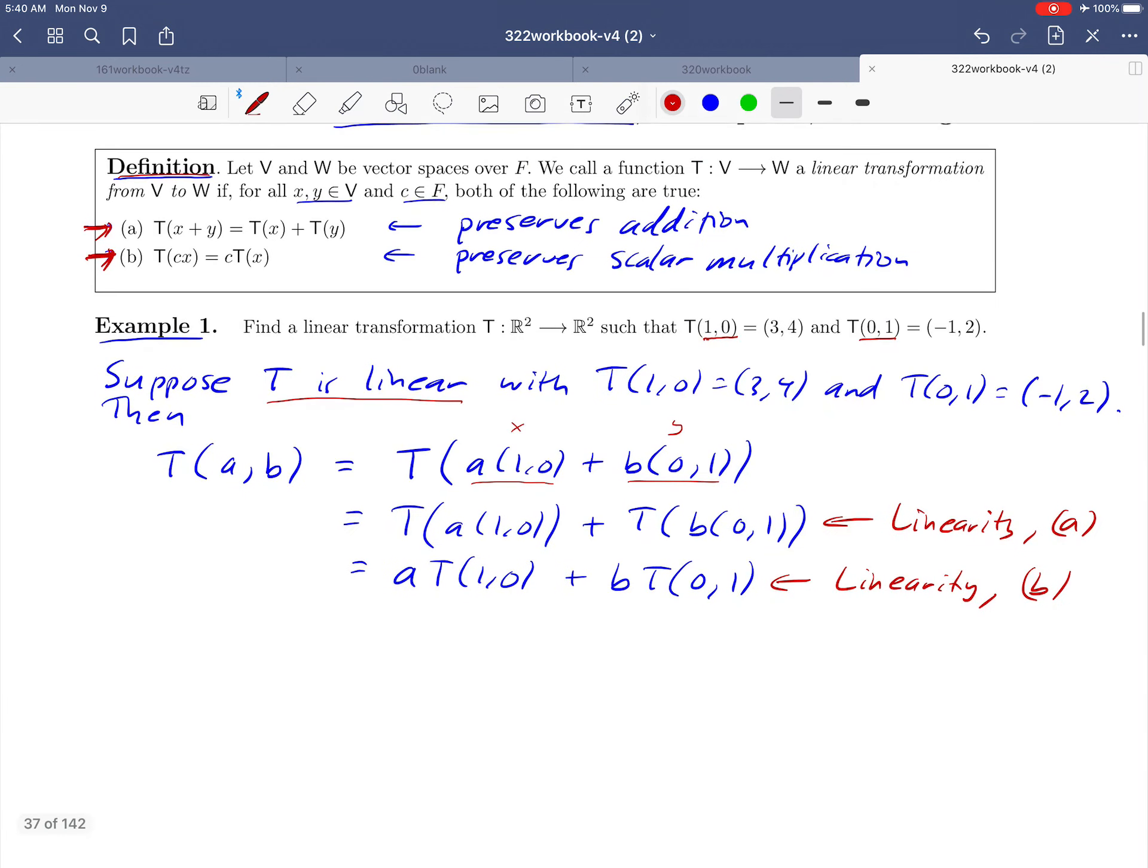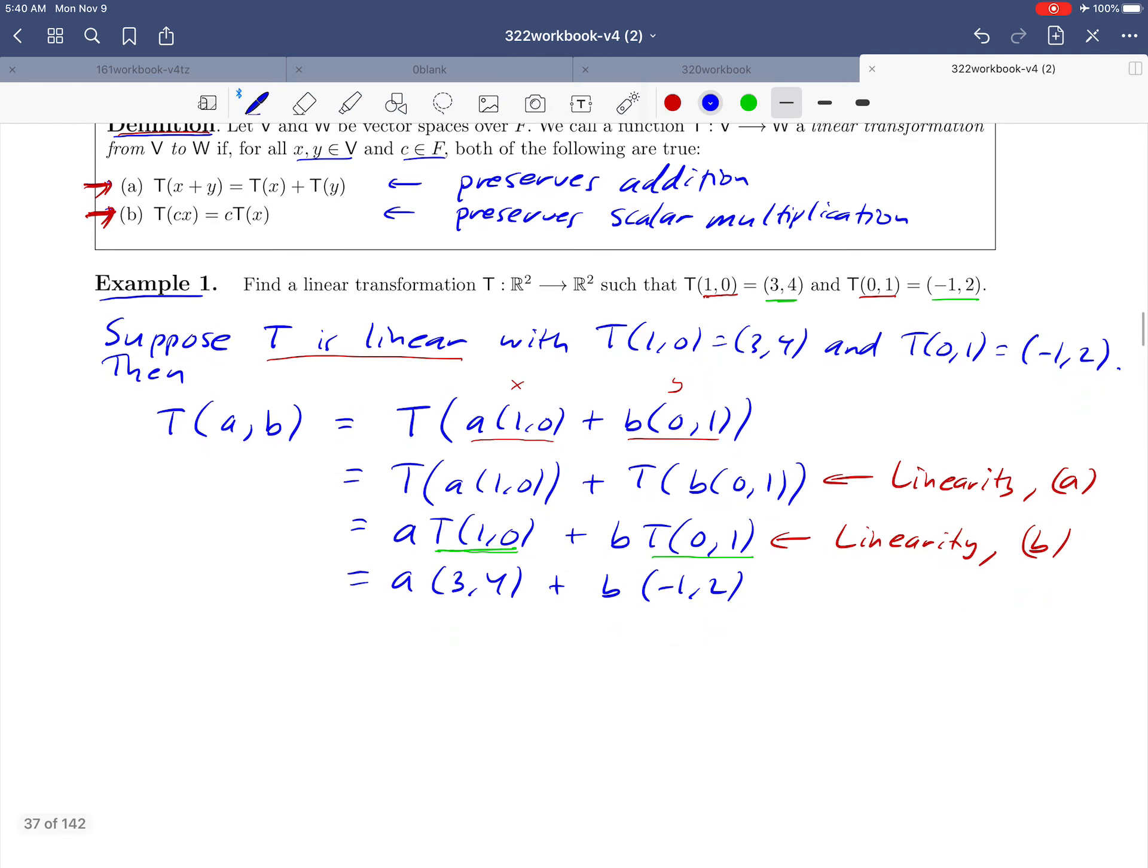But notice what we've done here. We've broken this down to a point where we've got T of (1, 0) and T of (0, 1), and we know what those values are. T of (1, 0), for example, is given to us up here as (3, 4). So this is now equal to a times (3, 4). And then similarly, T of (0, 1), that's (-1, 2). So we'll go ahead and substitute that in.